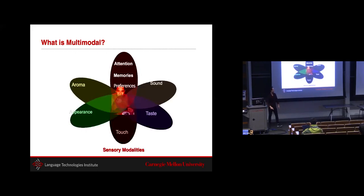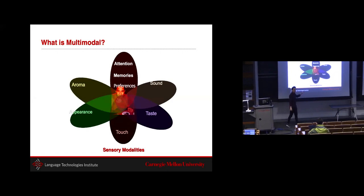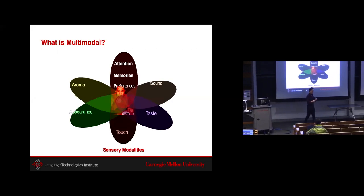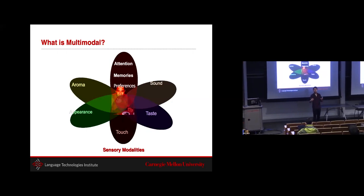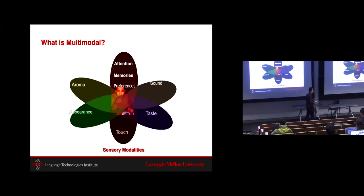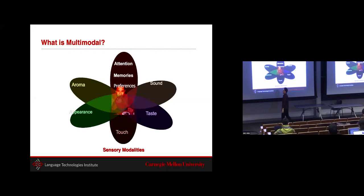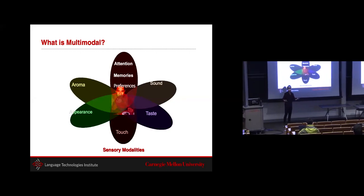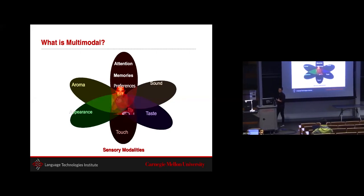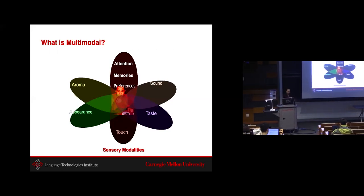A lot of work in multimodal is inspired by the multimodal sensory modalities humans have: we can see, smell, hear, touch, and taste. These five sensory modalities inform how we perceive the world. Even before computational machine learning, people in psychology and neuroscience were looking at how humans perceive these modalities, individually and in context of other modalities.